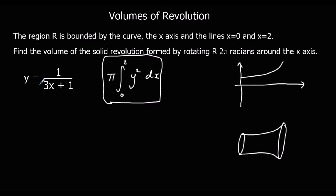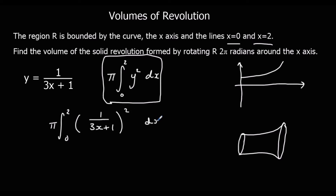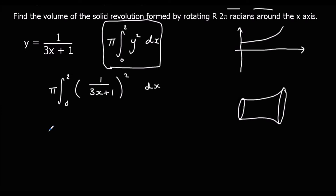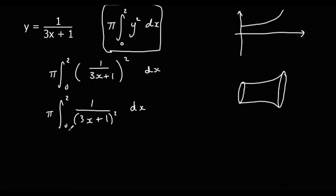So let's look at the question. We've got y equals 1 over 3x plus 1, and our limits are 2 and 0. So we're going to have π times the integral between 2 and 0 of 1 over 3x plus 1, all squared, with respect to x. If we square the top and bottom, we've got 1 over (3x plus 1) squared, which we can write as (3x plus 1) to the power of minus 2.